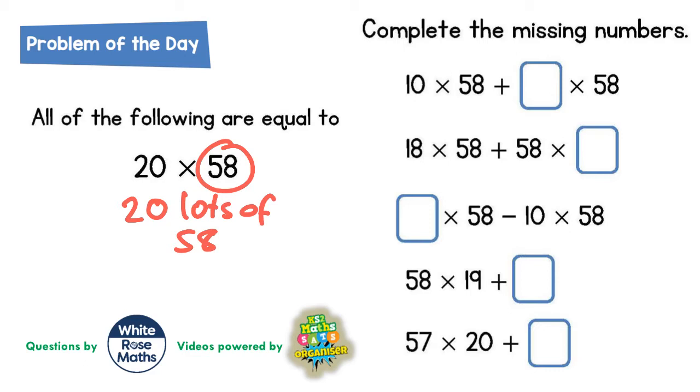So we're going to complete the missing numbers. Well, if we've got 10 lots of 58, how many more lots of 58 do we need so that we've got 20 lots of 58? Well, 10 lots of 58 would require another 10 lots of 58 because 10 and 10 makes the 20 lots of 58 that we're trying to get.